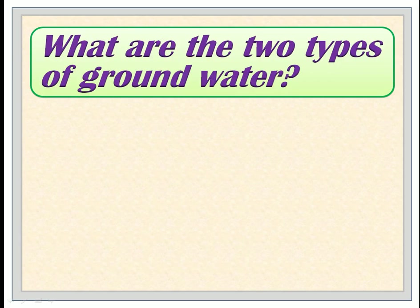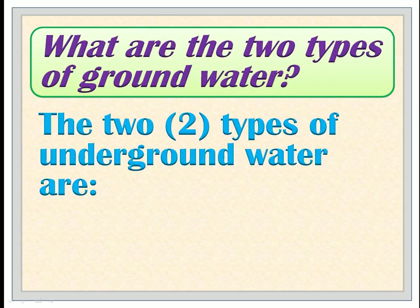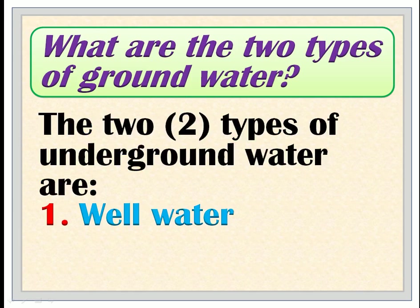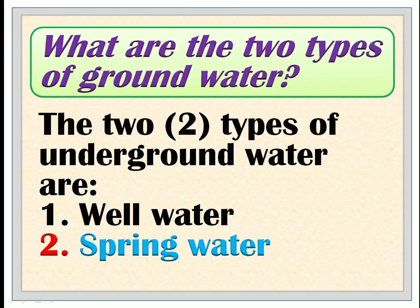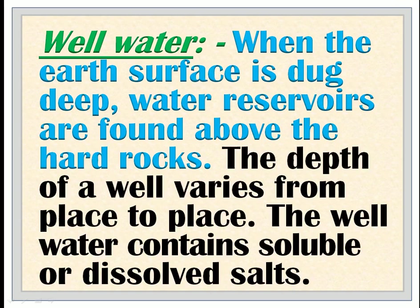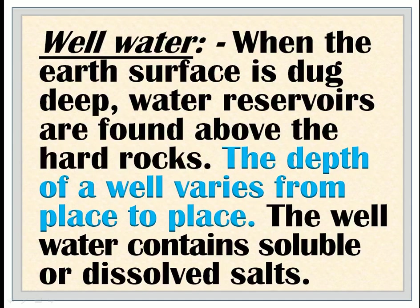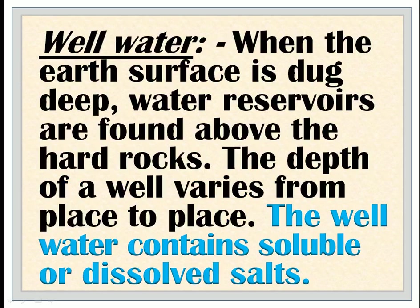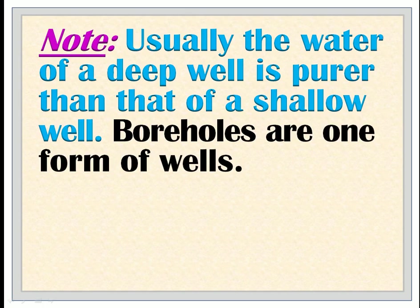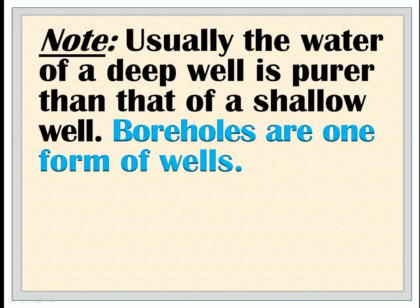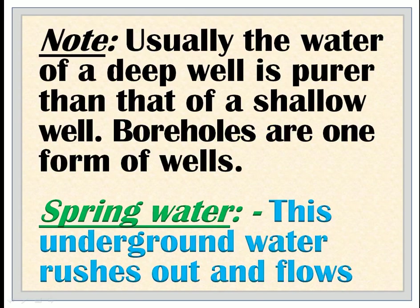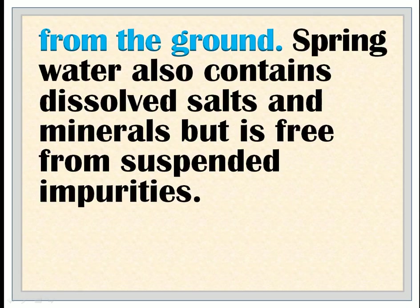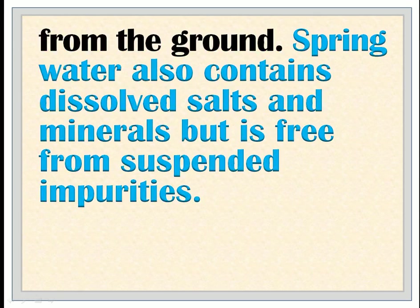What are the two types of underground water? The two types of underground water are: 1. Well water and 2. Spring water. Well water: When the earth surface is dug deep, water reservoirs are found above the hard rocks. The depth of a well varies from place to place. The well water contains soluble or dissolved salts. Note: Usually the water of a deep well is purer than that of a shallow well. Boreholes are one form of wells. Spring water: This underground water rushes out and flows from the ground. Spring water also contains dissolved salts and minerals but is free from suspended impurities.